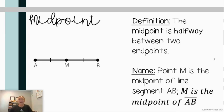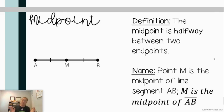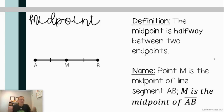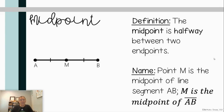Our next term is the midpoint. You might intuitively know what that means — the midpoint is halfway between two endpoints. So if I look at my diagram here, we would say point M is the midpoint of line segment AB. M is the midpoint, and you would write AB as a segment with the segment notation above it.